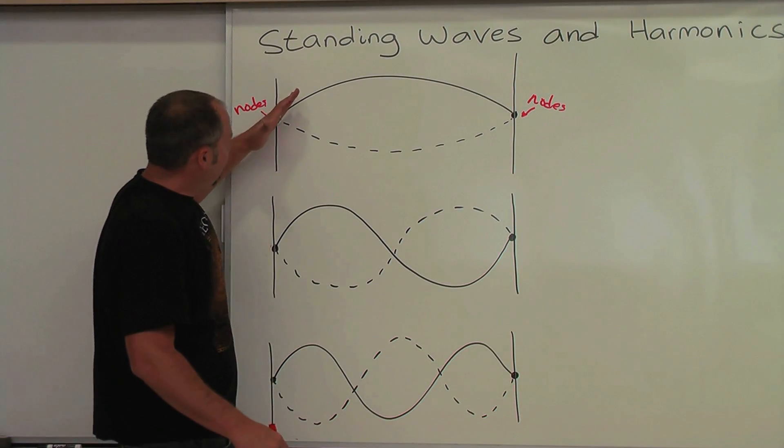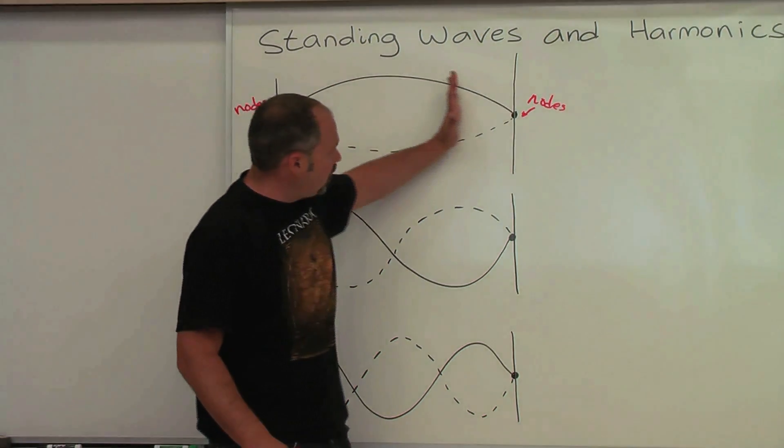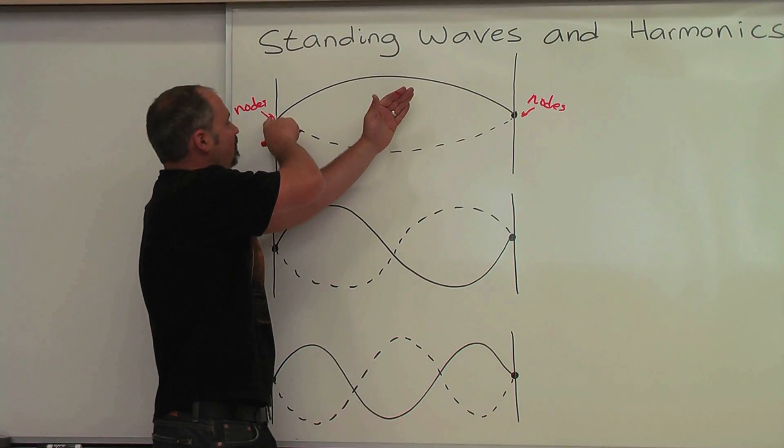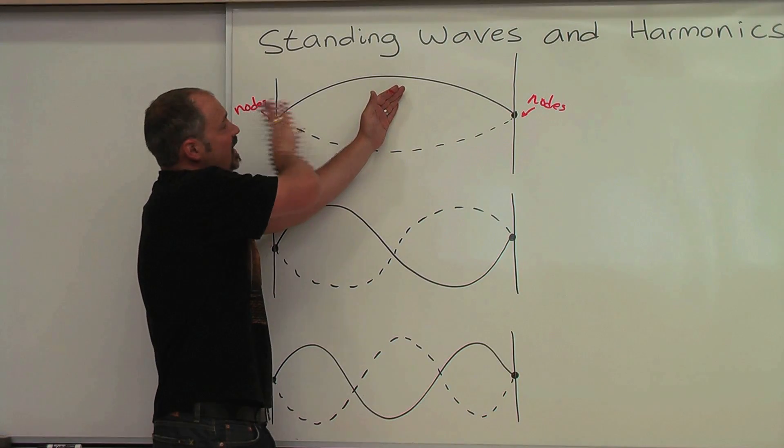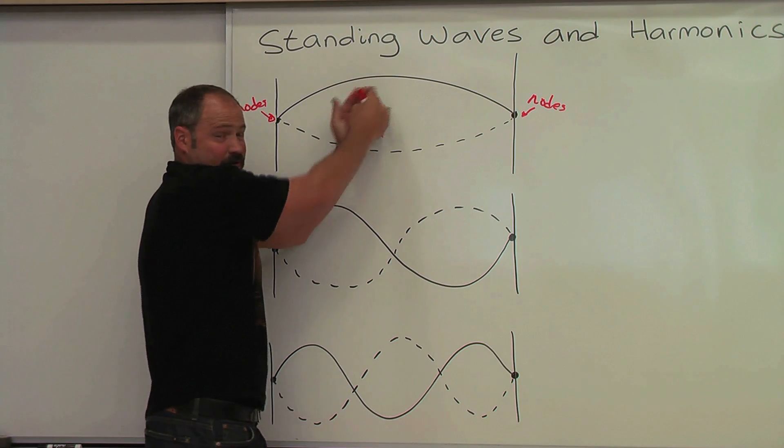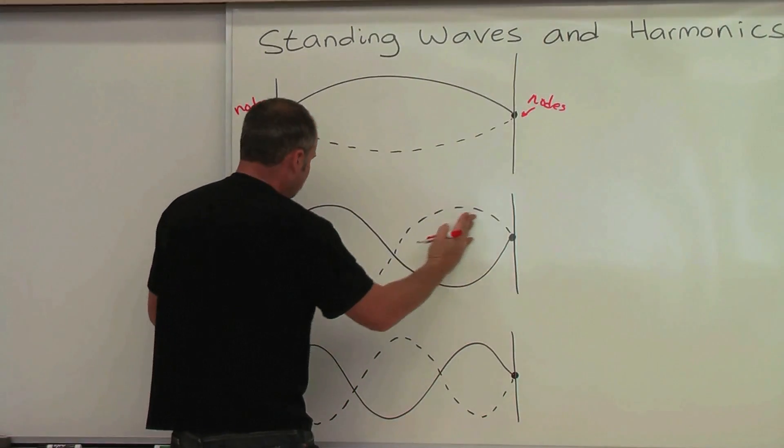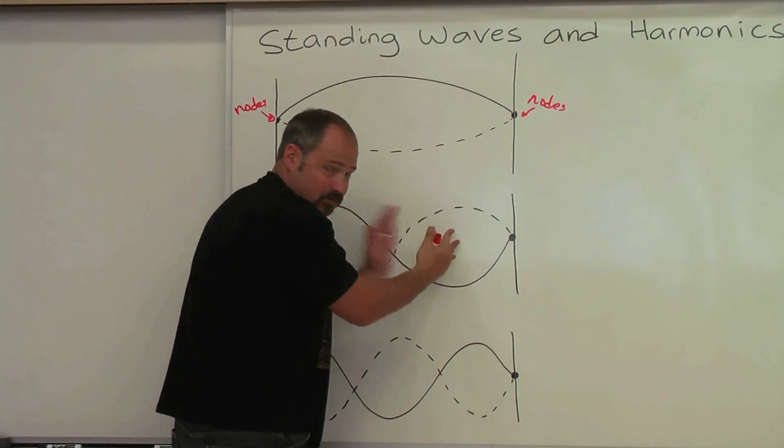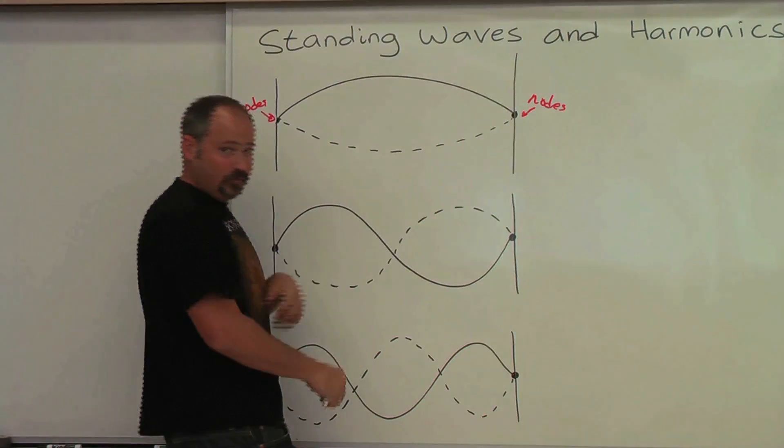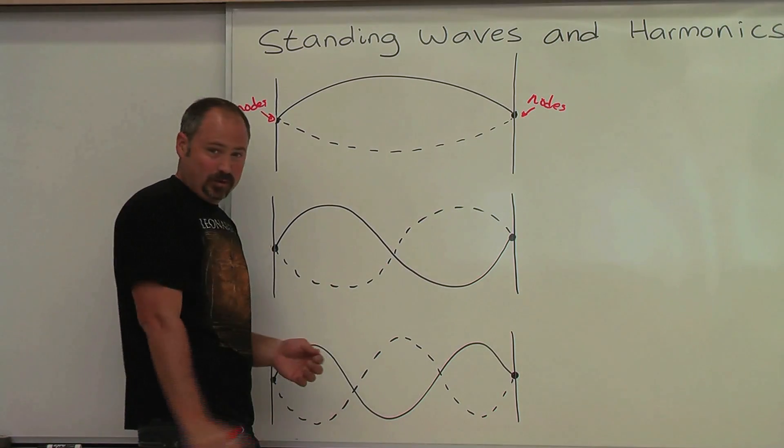A wave is coming this way, it reflects, and then it constructively interferes with the next wave coming out in the middle. Here, wave comes this way, comes back, and with the new waves coming in, it constructively interferes here, constructively interferes here, destructively interferes here.